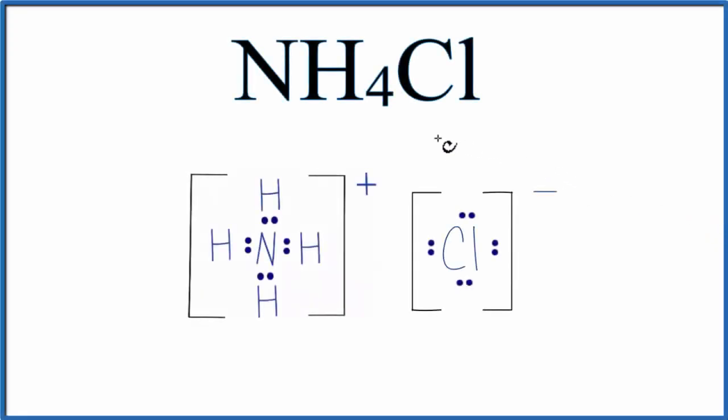Let's talk about the three different types of bonds we have here with NH4Cl, ammonium chloride, and why it's considered to be an ionic compound.